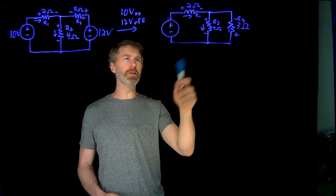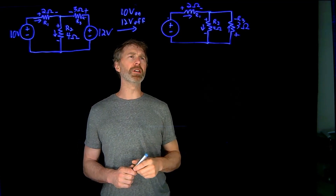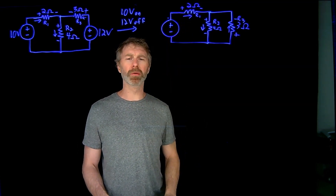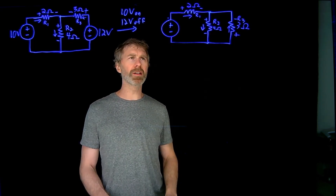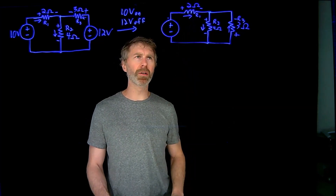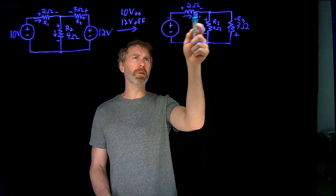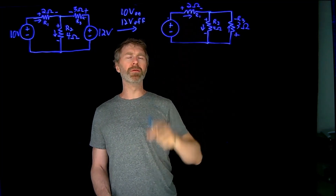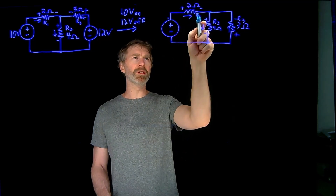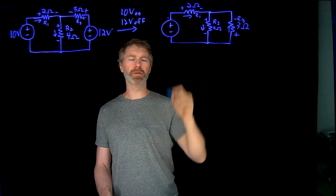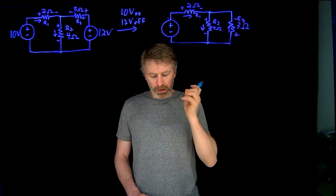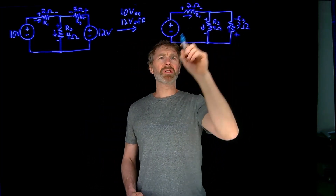In my redrawn circuit here, I've defined the polarity of the voltages and the directions of the currents. When I go through the calculation, I may find that the voltage across a resistor — say R1 — comes out negative. That just means the polarity is the reverse of what I've defined, so a negative one means the other side is actually more positive, giving plus one volt measured in that orientation.